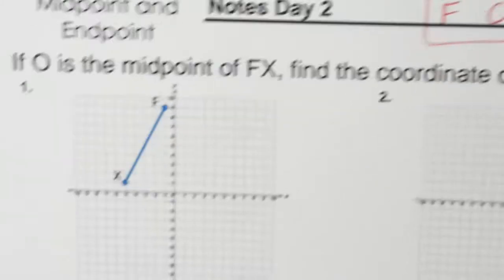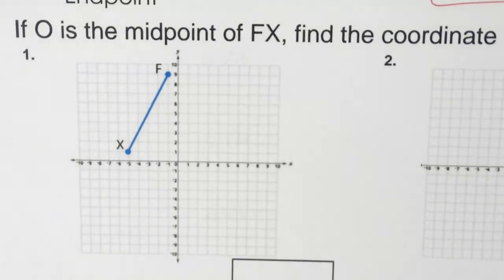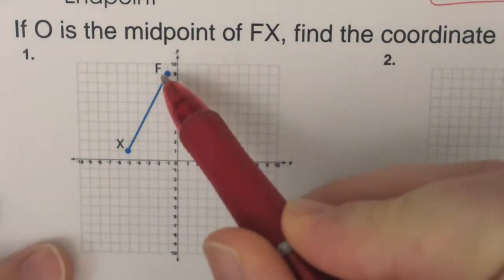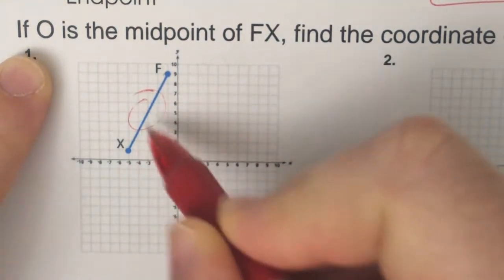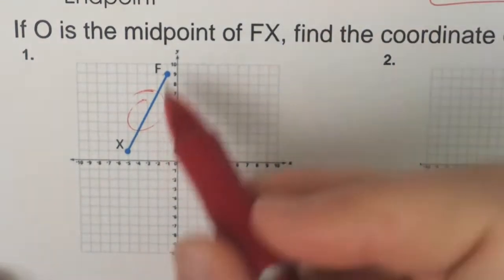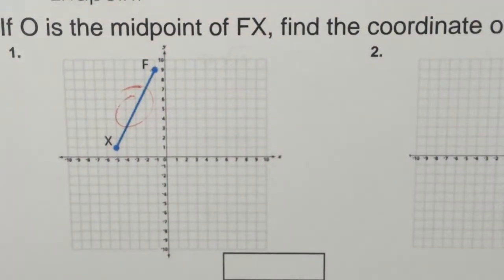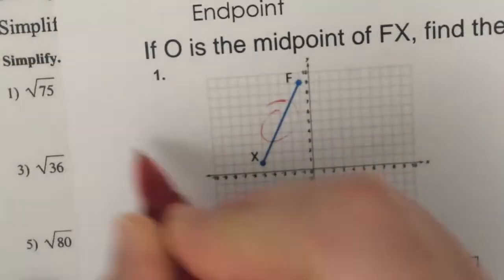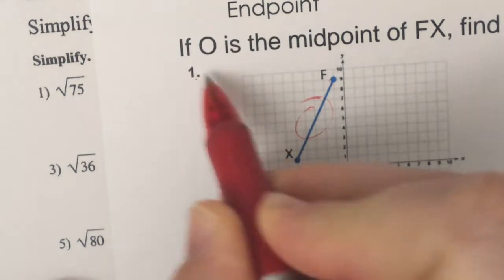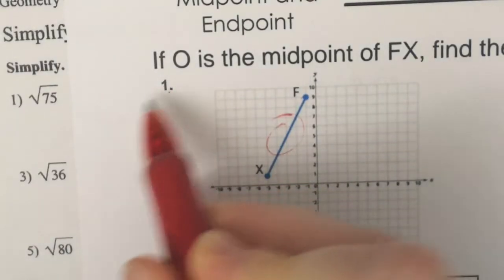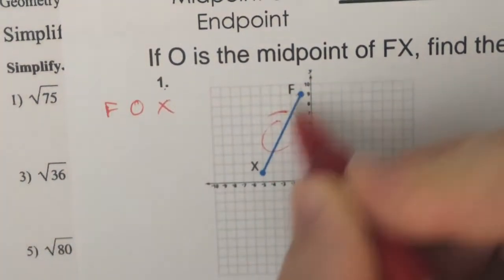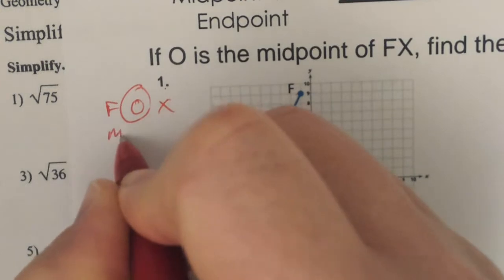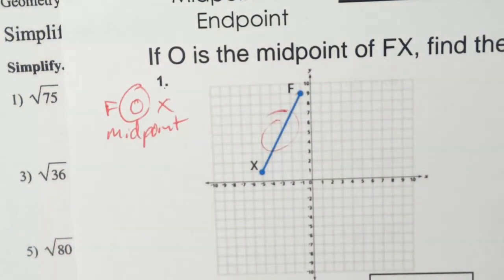Let's just do a couple of problems. Let's decide what we're looking for. O is in the middle of F to X, so we're looking at something over here — O is somewhere in the middle. We have to decide what we're looking for. We're looking for the midpoint. So F, O, X — what am I missing? I'm missing the O. So I'm looking for the midpoint.